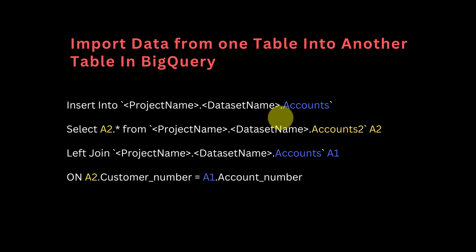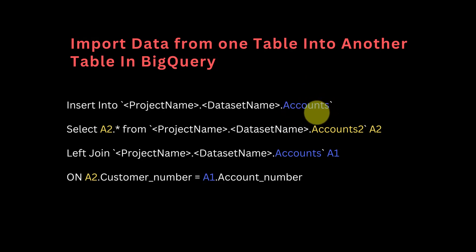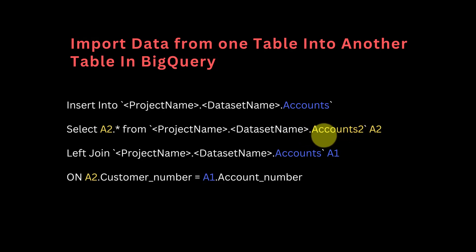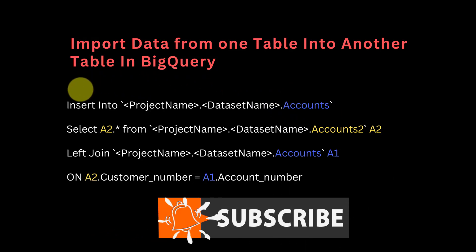The precondition for using this code is that the two tables have to have pretty much the same fields or the same columns. So let's say you have a table called 'accounts' and you have another table in another dataset in BigQuery also called 'accounts' which has the same fields. Let's say you imported this 'accounts2' table from Excel and it just has more records which belong to the accounts table and need to be added to it.